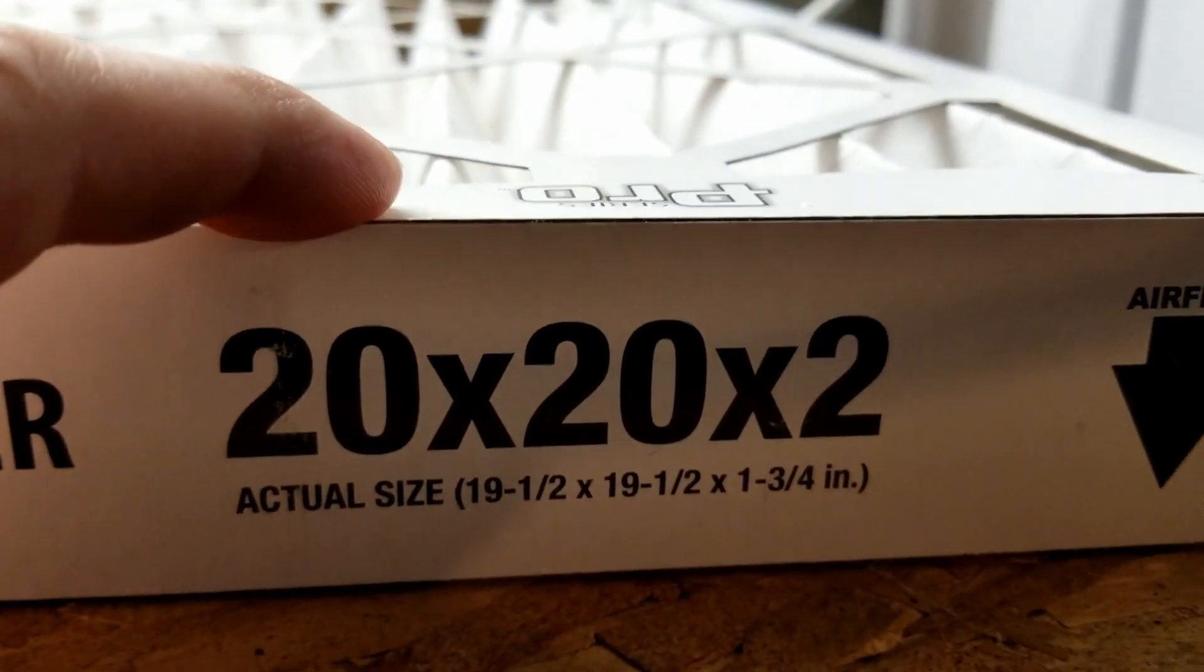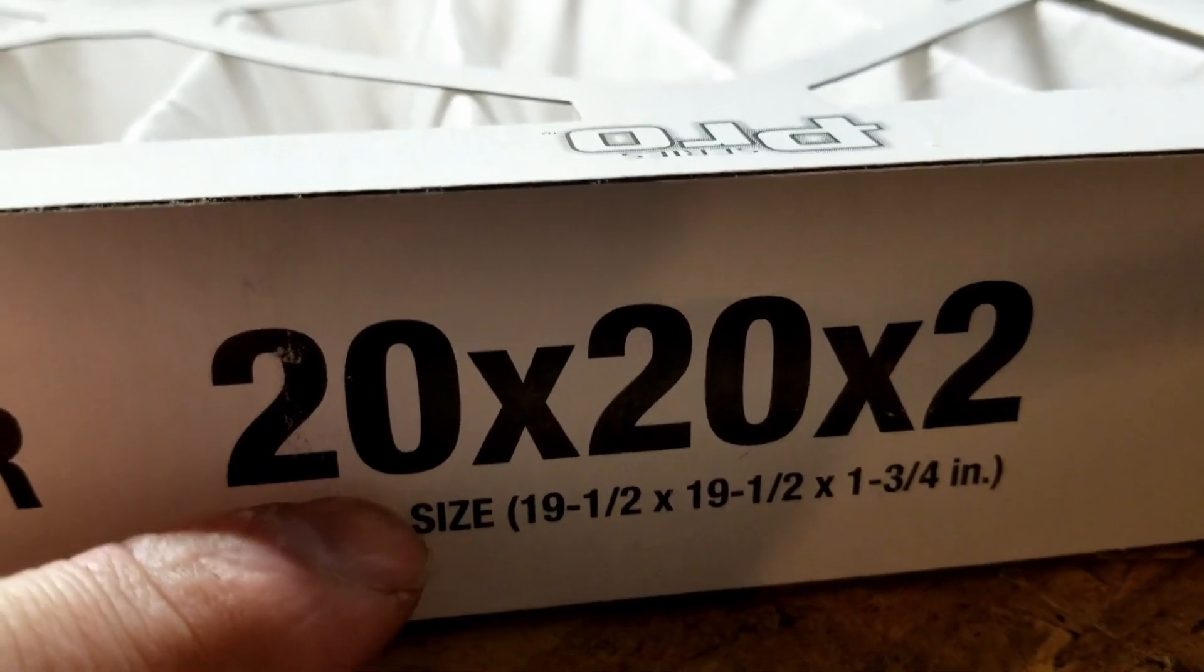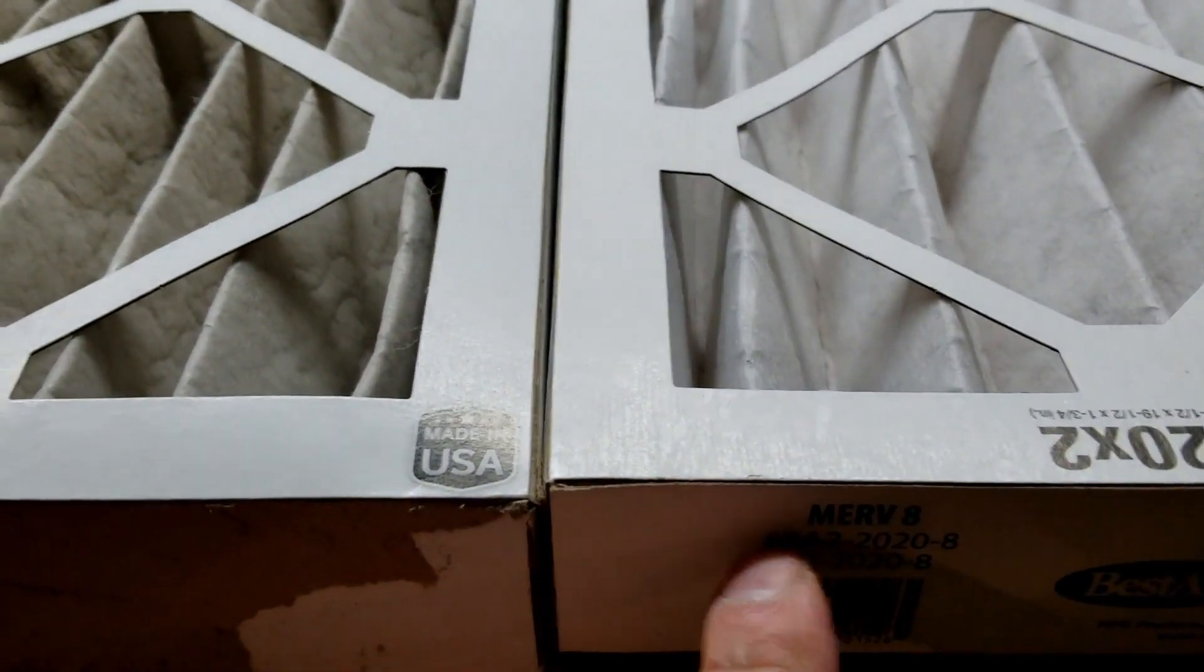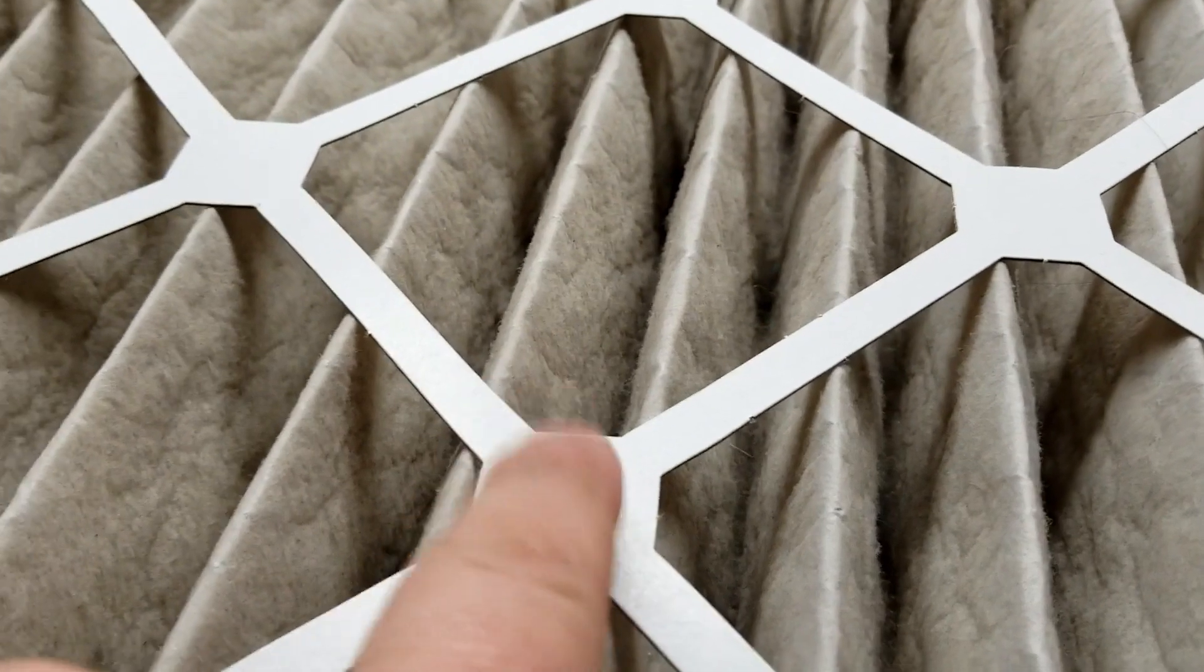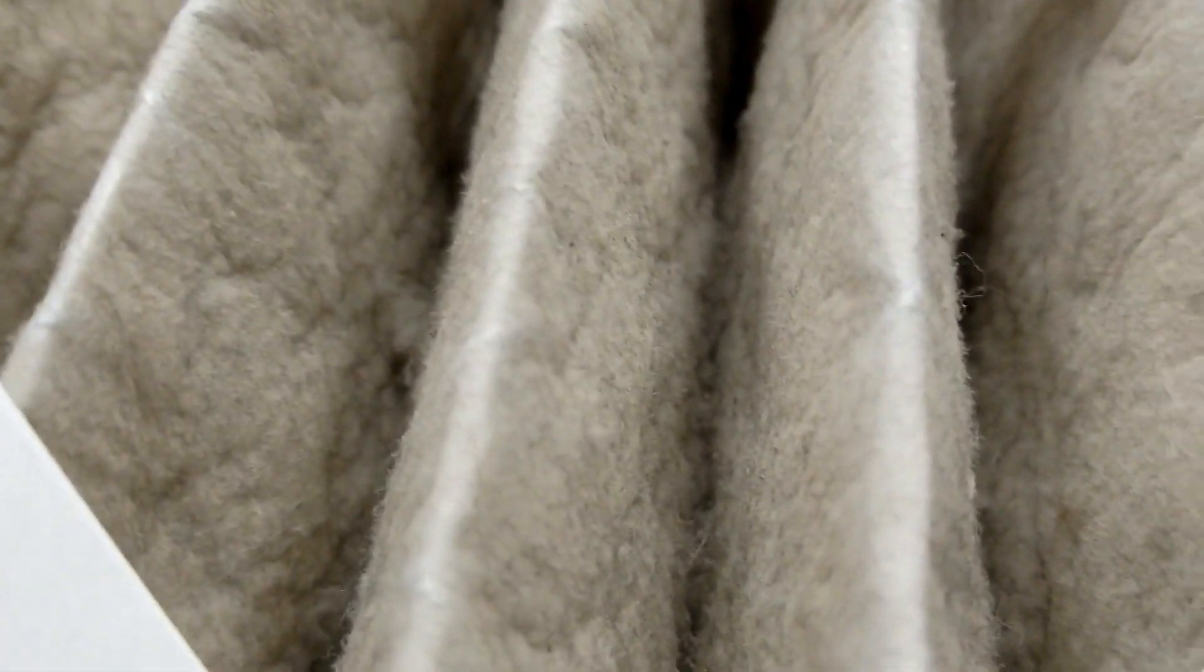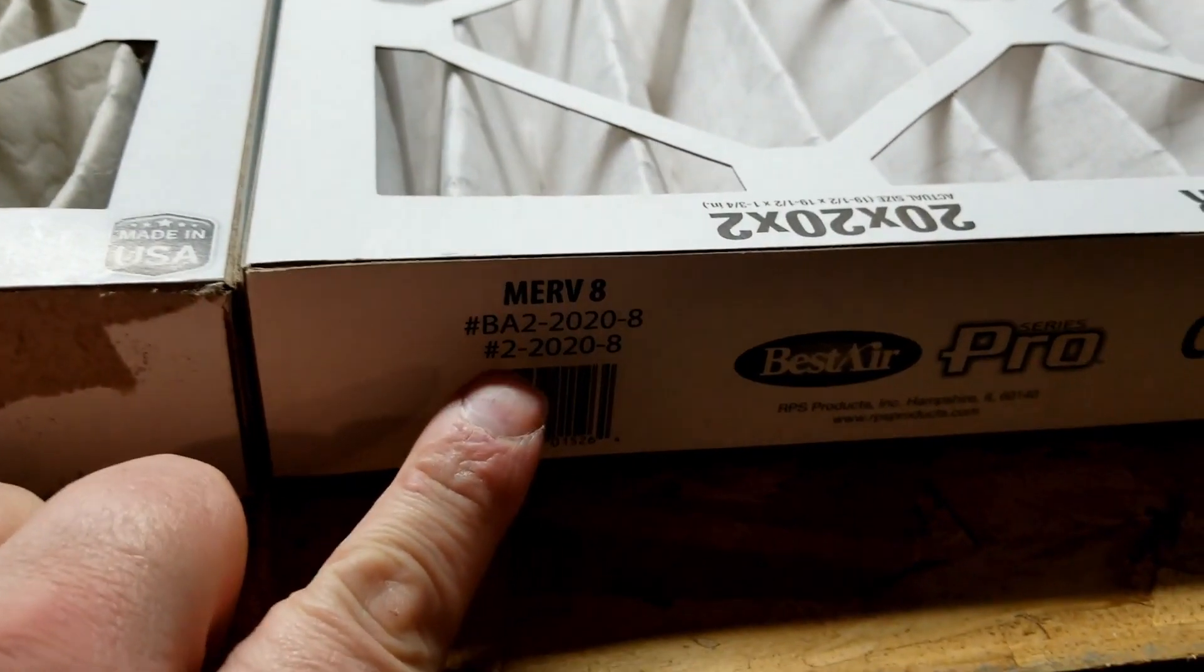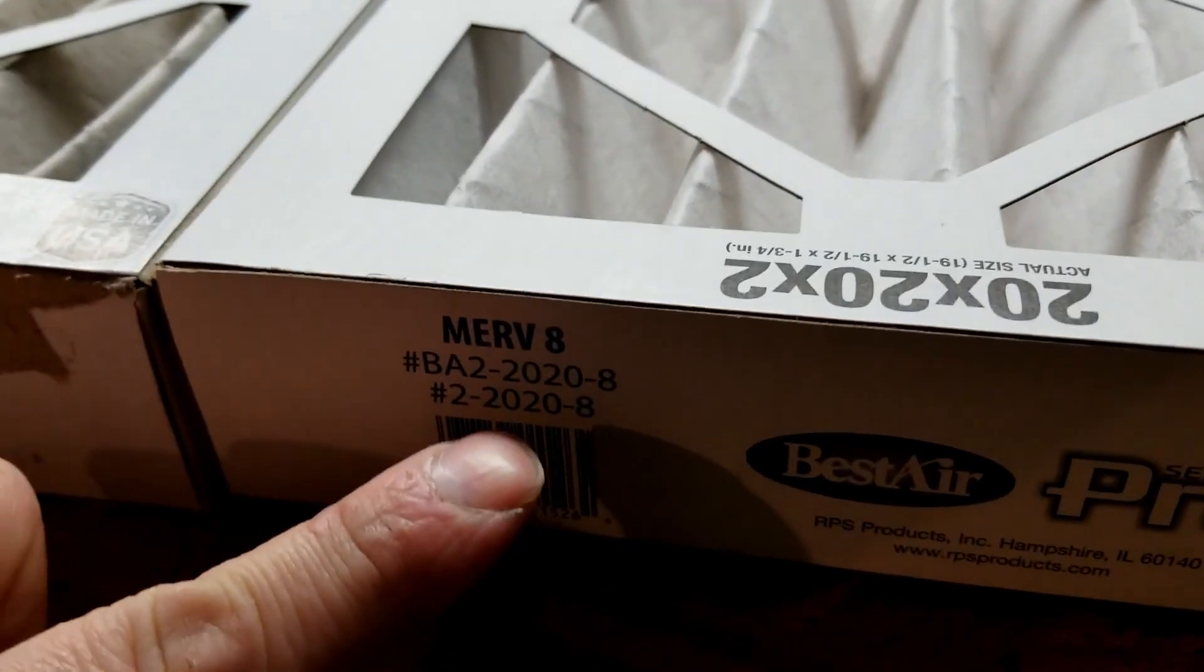Just using the MERV 8 because filters, as they get dirty, they actually filter better because they're getting clogged. Whatever size microns these things let through, as they start catching crud and dirt, they actually filter more. Probably after a month or so your MERV 8 suddenly becomes a MERV 9 and a 10 as it goes on.